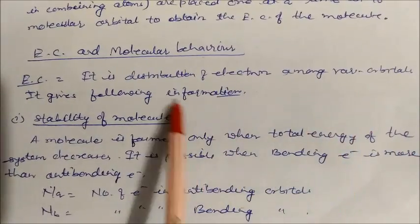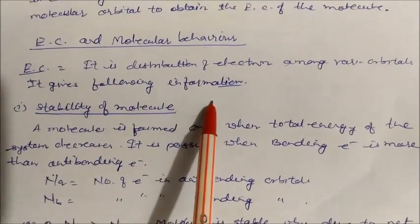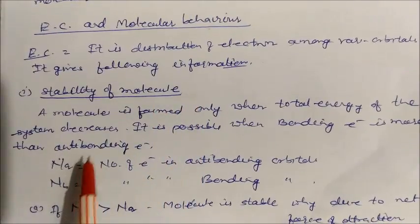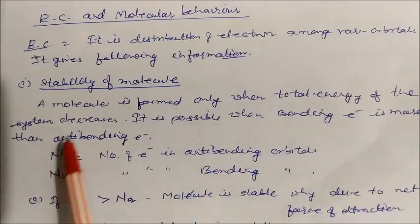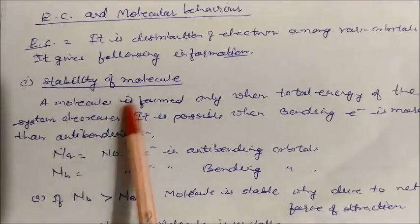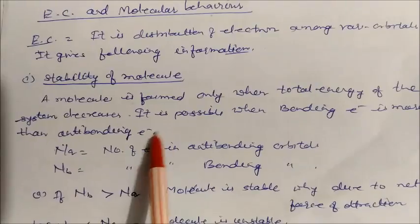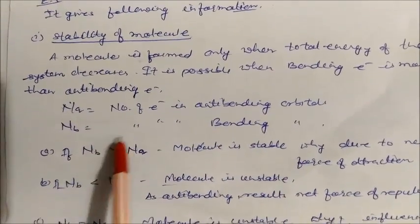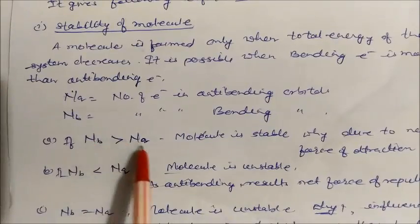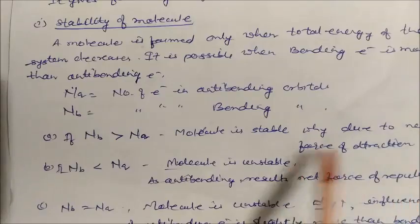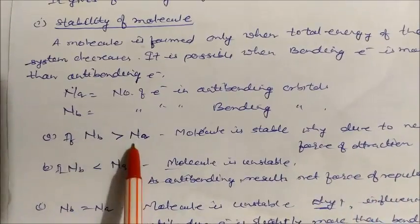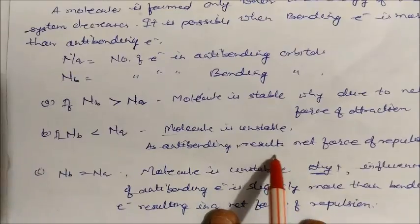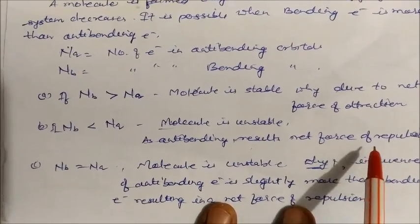The electronic configuration is the distribution of electrons among various molecular orbitals. It provides information about molecular stability. A molecule is stable when its total energy decreases — this happens when the number of bonding electrons (NB) is greater than the number of anti-bonding electrons (NA), resulting in a net force of attraction. If anti-bonding electrons are more, the molecule is unstable due to a net force of repulsion.